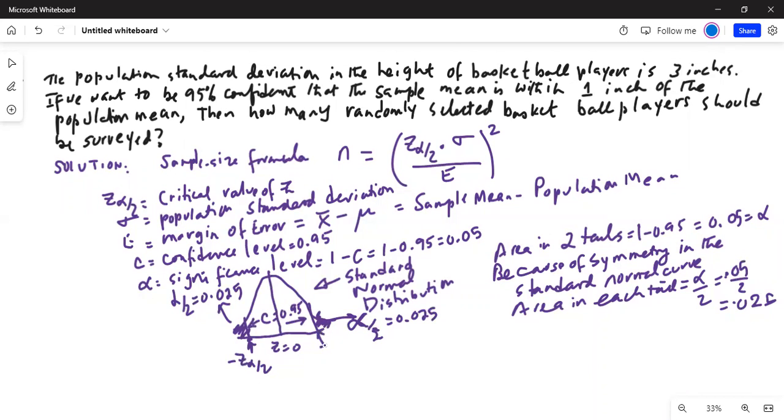Notice the area to the left of minus z alpha by 2 in the left tail is alpha by 2, and the area to the right of z alpha by 2 in the right tail is also alpha by 2. That is the way the notation works.